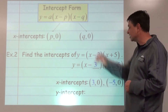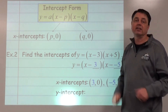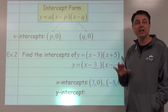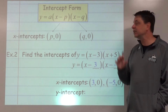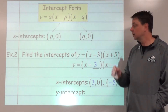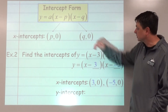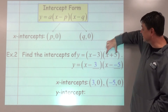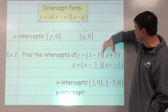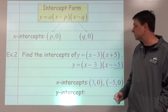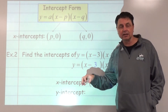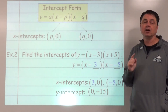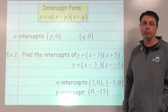For the y-intercept, always substitute 0 in for x. So 0 minus 3 is negative 3, and 0 plus 5 is 5. Negative 3 times 5 is negative 15. We plugged in 0 for x and got negative 15 for y, so the y-intercept is (0, negative 15). In this class, the y-intercept is always expressed as a point, not just a number.